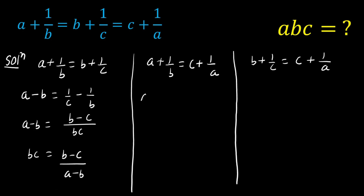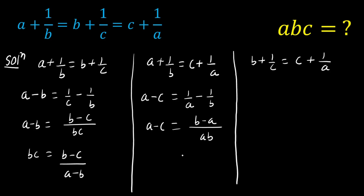Next, equating a plus 1 over b equals c plus 1 over a. Taking a and c to the left hand side gives a minus c equals 1 over a minus 1 over b. With common denominator a times b, we get a minus c equals (b minus a) over (a times b), so a times b equals (b minus a) over (a minus c). This is equation number two.